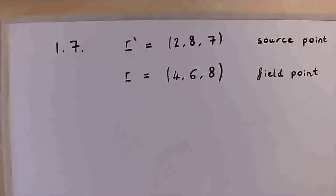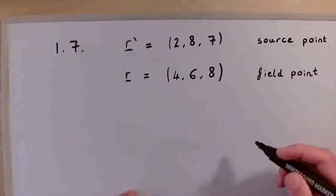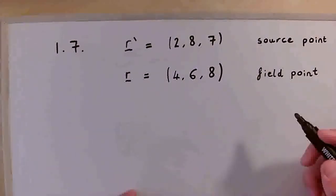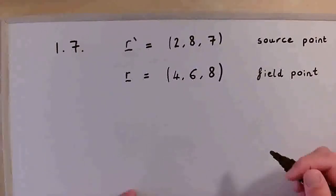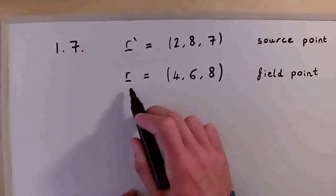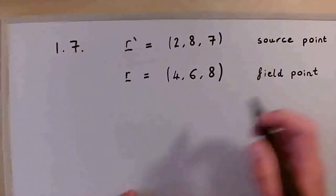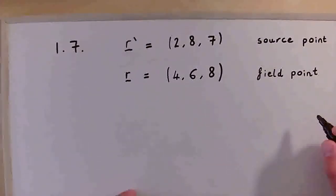So we have a source point, R prime here, and we can think of that as possibly the source or the location of an electric charge. And then we have a field point here, R, and we can just think of that as the location at which we want to determine the electric field.